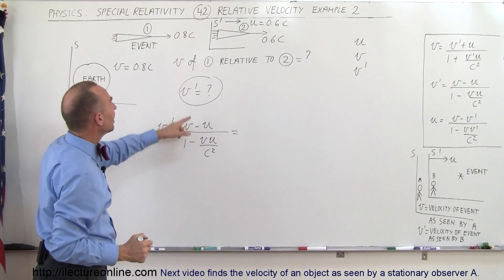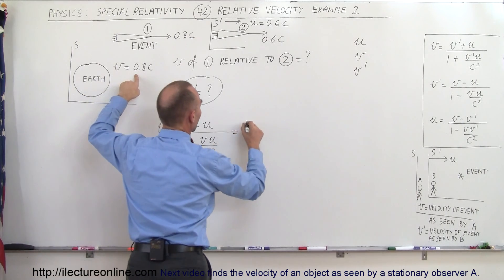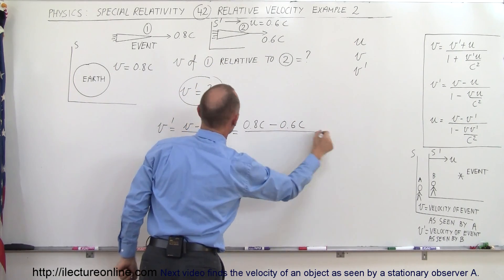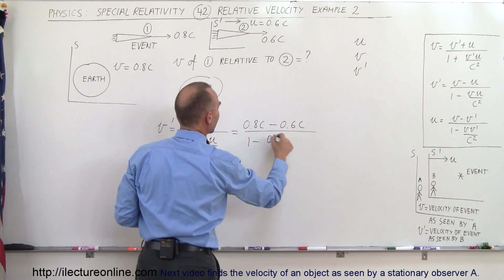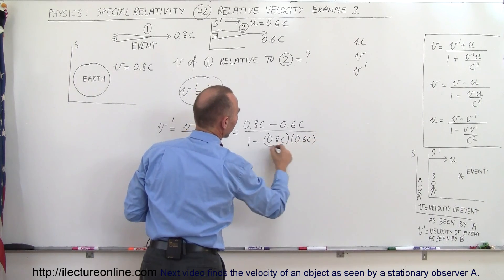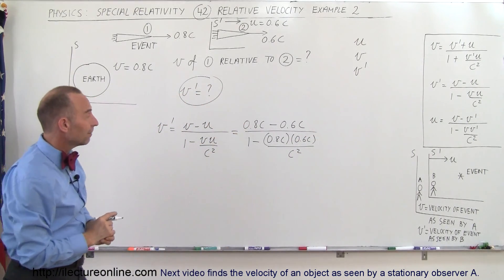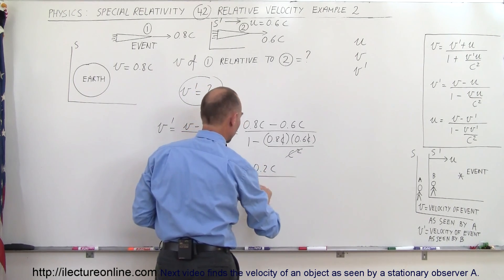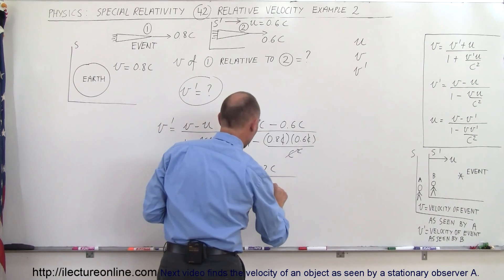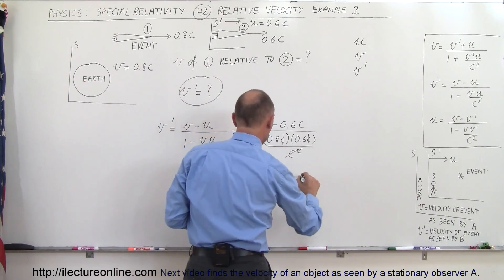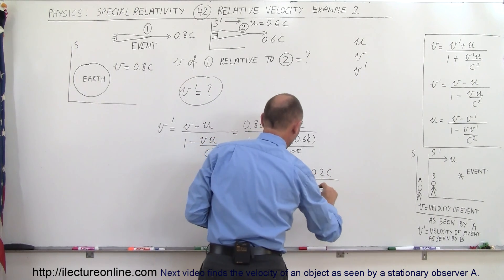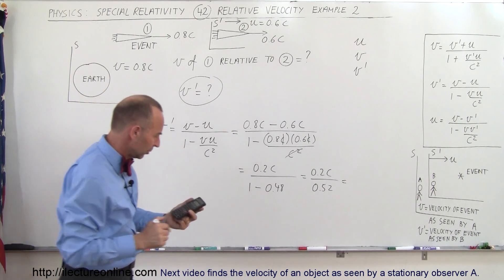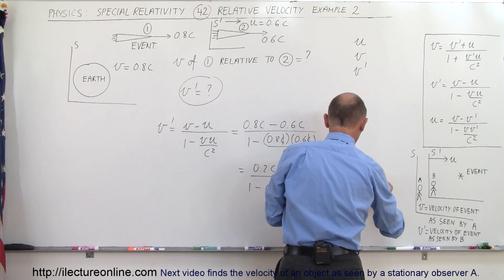Let's plug in numbers. V' equals V minus U, divided by 1 minus (V times U over C squared). So that's 0.8C minus 0.6C, divided by 1 minus (0.8C × 0.6C / C²). The C's cancel in the denominator, giving 0.2C divided by (1 minus 0.48), which is 0.2C divided by 0.52. That equals 0.385C.